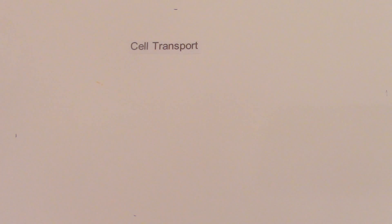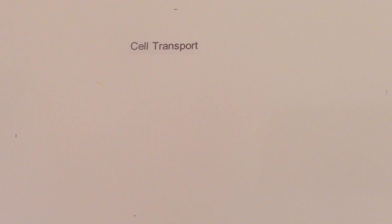In today's lesson we're going to be learning about cell transport. An organism must be able to obtain energy and raw materials and get rid of waste. An organism's cells perform all of these functions. These functions help keep cells healthy so they can divide. Cell division allows organisms to grow and repair injuries. This exchange of materials between a cell and its environment takes place at the cell's membrane.